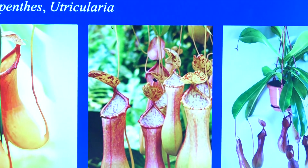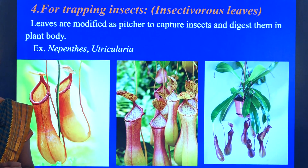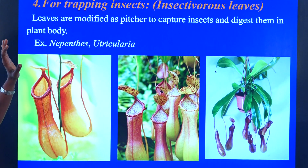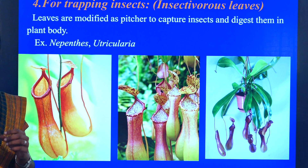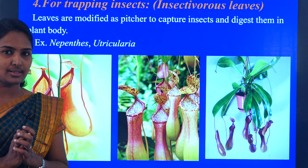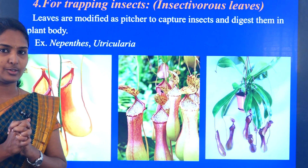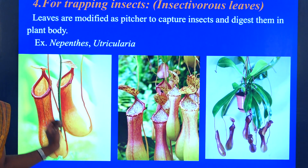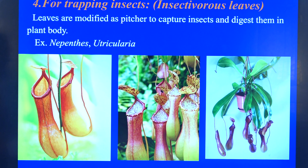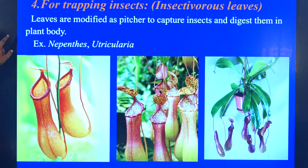Moving on to the next modification — that is for the trapping of insects. For trapping insects there is a specialized plant we call an insectivorous plant. The function of an insectivorous plant is mainly absorption of nitrogen. The plant lacks nitrogen and cannot produce it on its own, so it traps insects to absorb nitrogen from the insect body. Leaves are modified as pitchers to capture insects and digest them in the plant body.